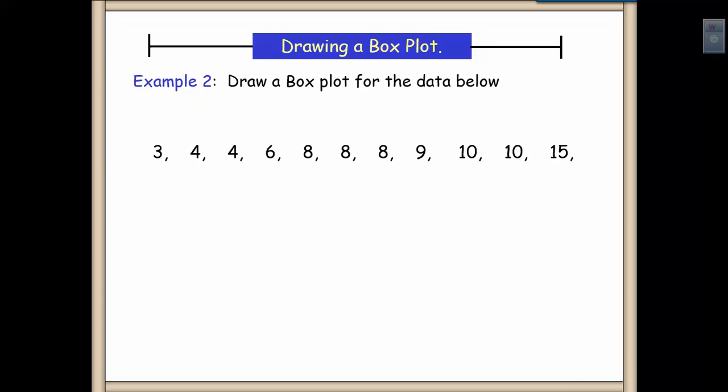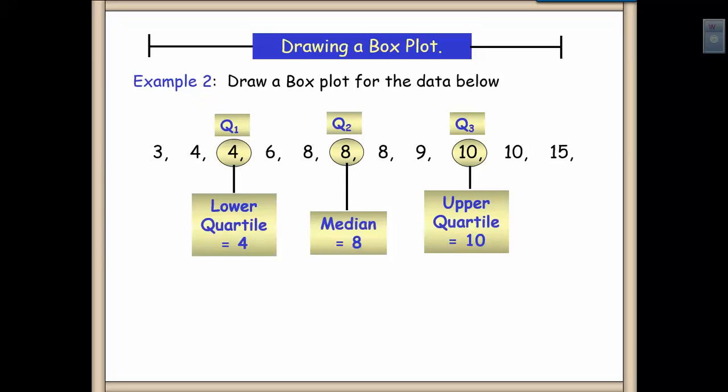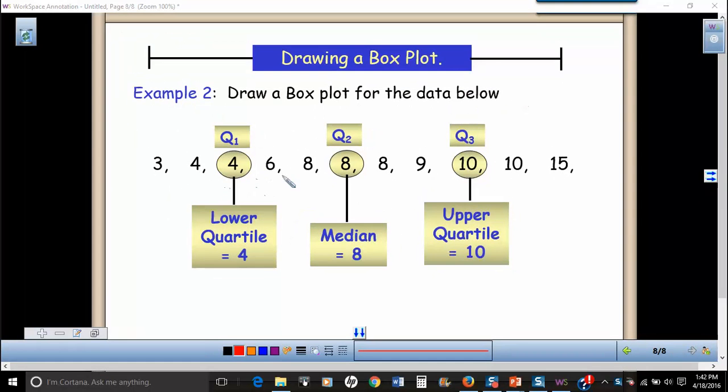All right, so let's go ahead and draw a box plot for this data set. Here I have 11 numbers. So the first thing that I would do is find the median or the middle number, which in this case would be eight. I have five numbers to the left of eight and five numbers to the right of eight. So this eight here in the middle is my median.